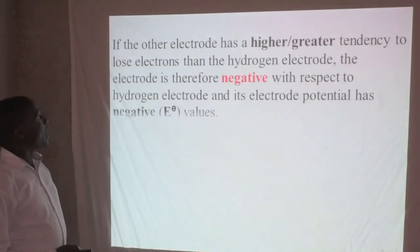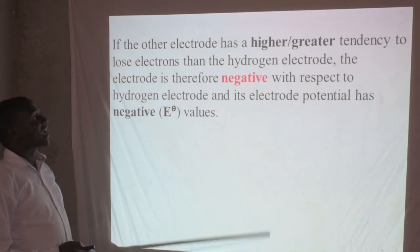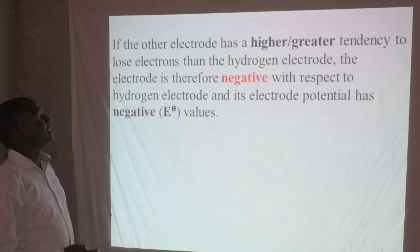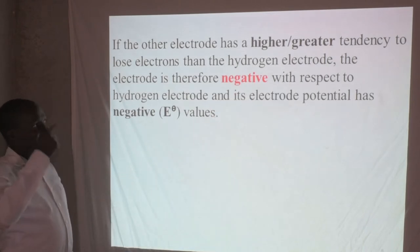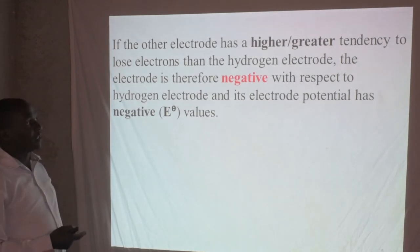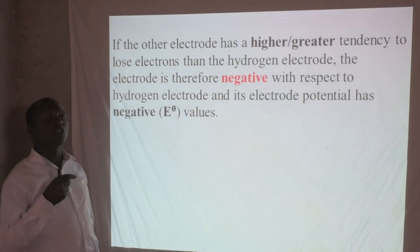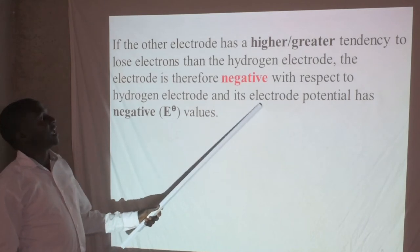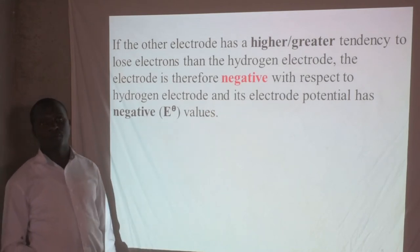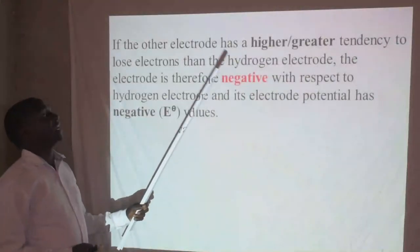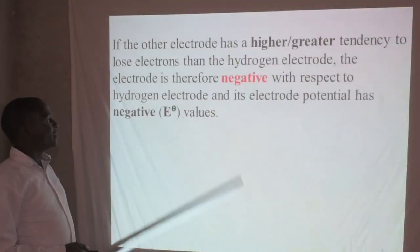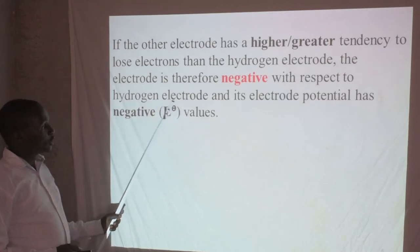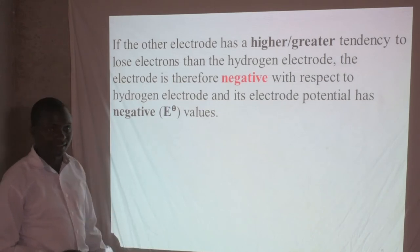If the other electrode has a higher tendency to lose electrons than the hydrogen electrode, then the electrode is negative with respect to hydrogen, and its electrode potential has a negative E-naught value. If it has a high tendency to lose electrons, that electrode will be negatively charged, and the E-naught value — the electromotive force produced — will be negative.